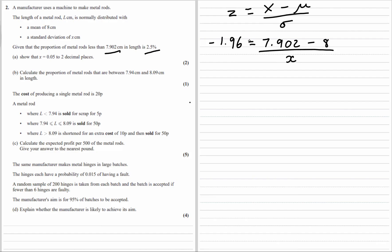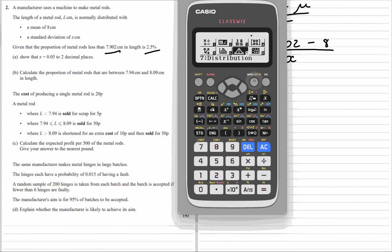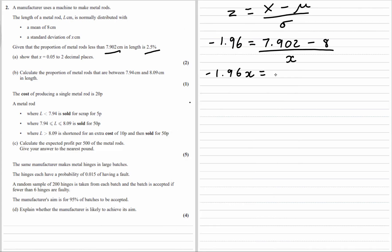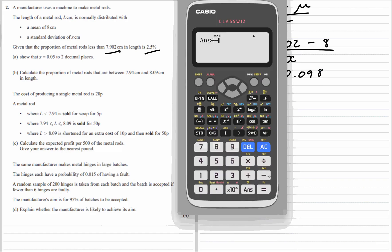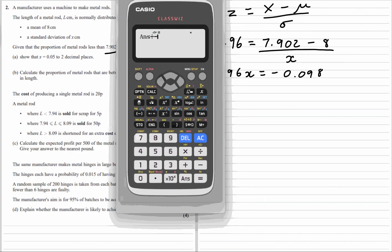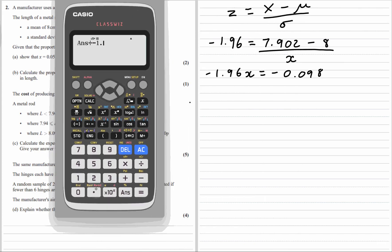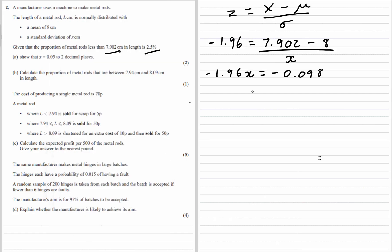Negative 1.96. Then we can just solve for x, times both sides by x. 7.902 take away 8 is negative 0.098. Then divide by negative 1.96. And we get exactly 0.05. That's part A.